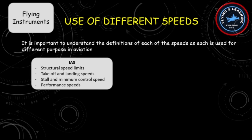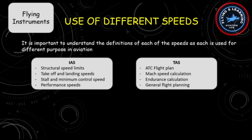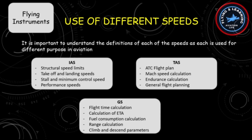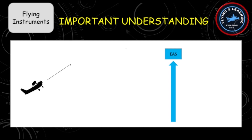TAS is the true airspeed of the aircraft in relation to the air, so it is used in ATC flight plans, Mach speed calculation, endurance calculation, and general flight planning. Ground speed is the actual speed of the aircraft in relation to the ground, and is used for calculating flight time, estimated time of arrival, fuel consumption, and range calculation.